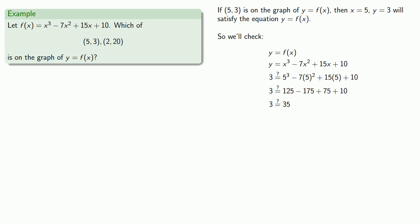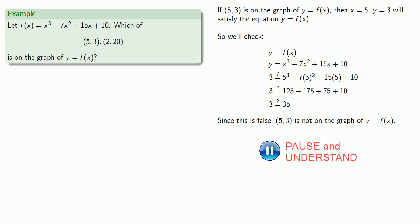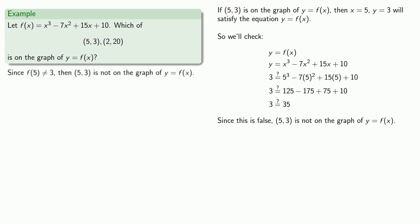And this statement is false. And since this is false, (5, 3) is not on the graph of y equals f of x. If it's not written down, it didn't happen. And so what we write down here is that since f of 5 is not equal to 3, then (5, 3) is not on the graph of y equals f of x.